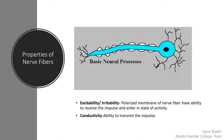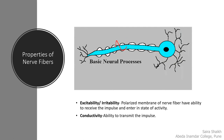The nerve fiber is the axon of the nerve cell. The axon has a polarized membrane and the ability to receive the impulse. After receiving the impulse, it gets excited and enters a state of activity, then transmits this impulse further. The figure below shows how the impulse is received at the dendrite and further transmitted through the axon.